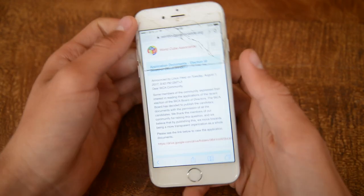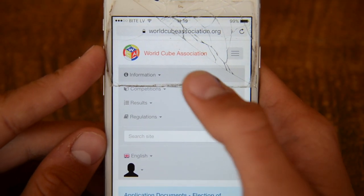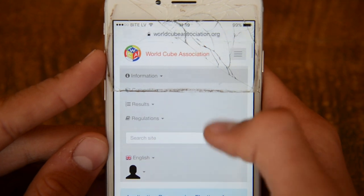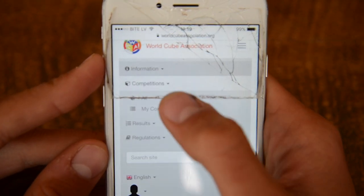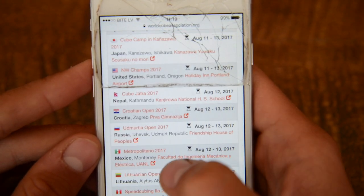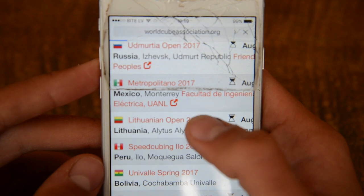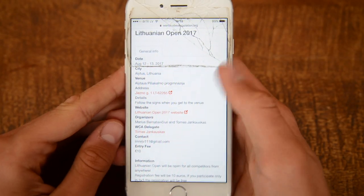If you don't know how to find a competition nearby, you go on worldcubeassociation.org, click competitions, and then you can just find your competition. As you can see, I am going to the Lithuanian Open 2017 and there's all the info about the competition.